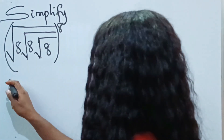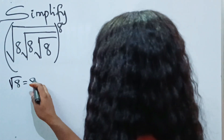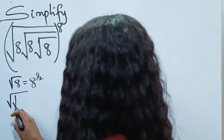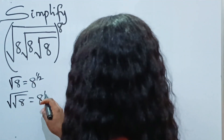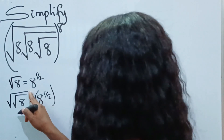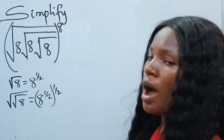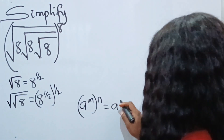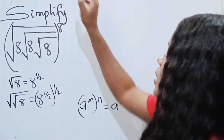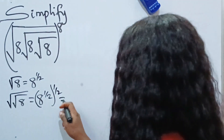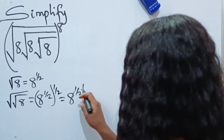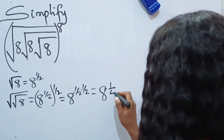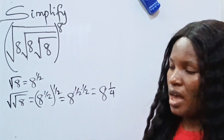Before we use the first method, I want us to note that the square root of 8 is equal to 8 to the power of one half. Now, the square root of the square root of 8 is equal to 8 to the power of one half, raised to the power of another half. When you have a to the power of m raised to the power of n, this is the same as a to the power of m multiplied by n. So this equals 8 to the power of one half times one half, which is 8 to the power of one quarter.